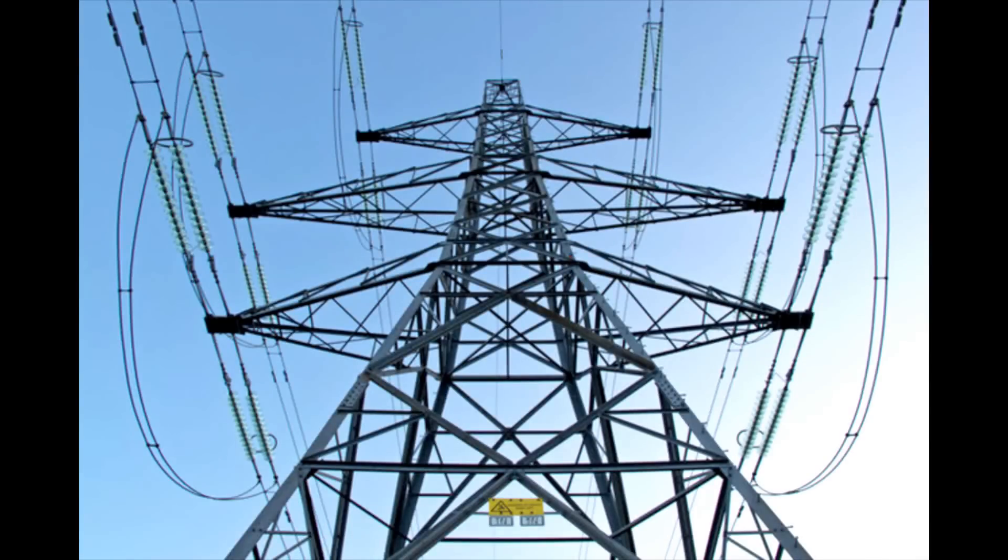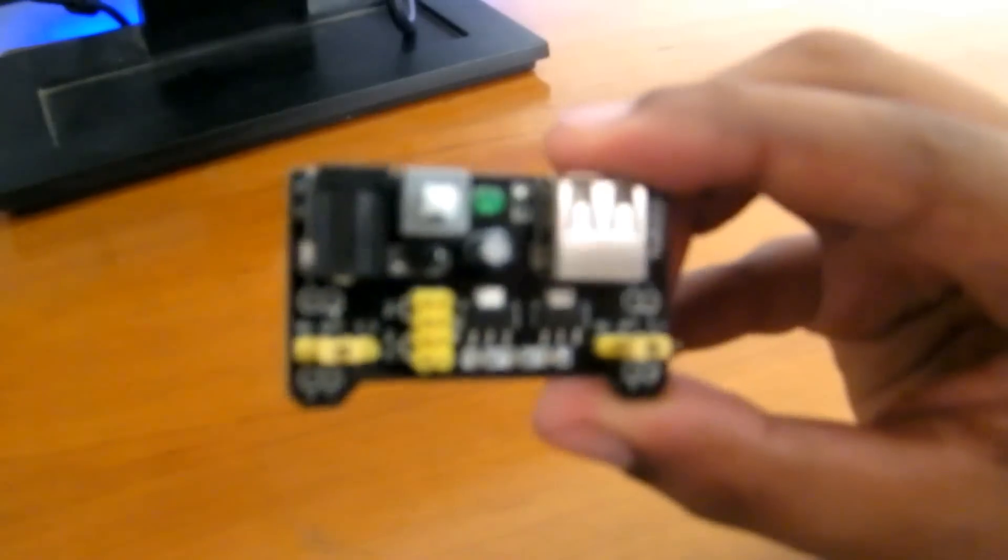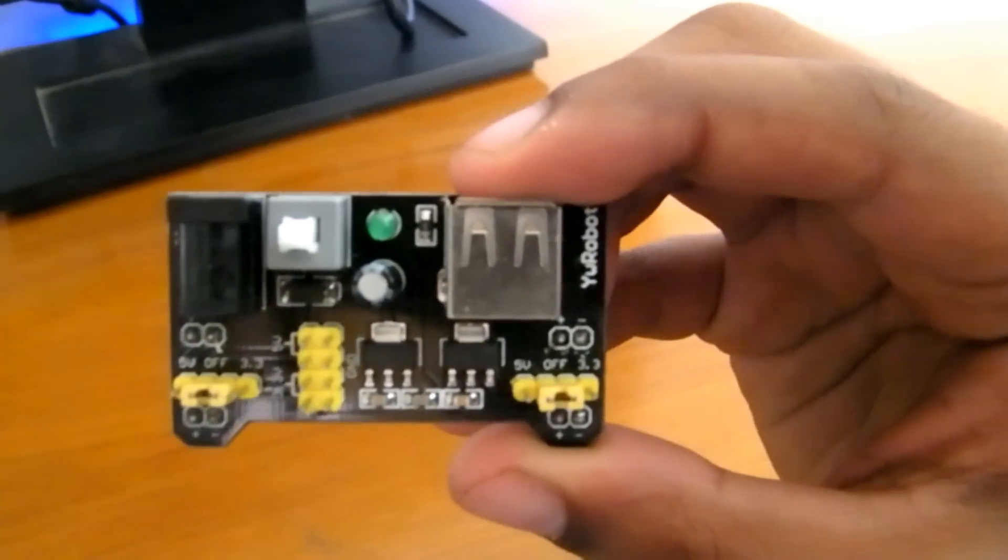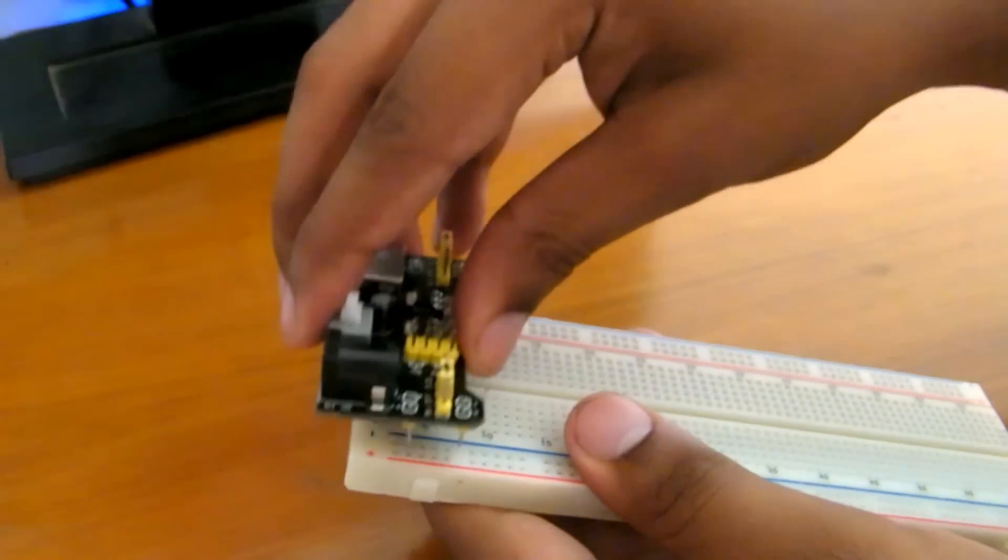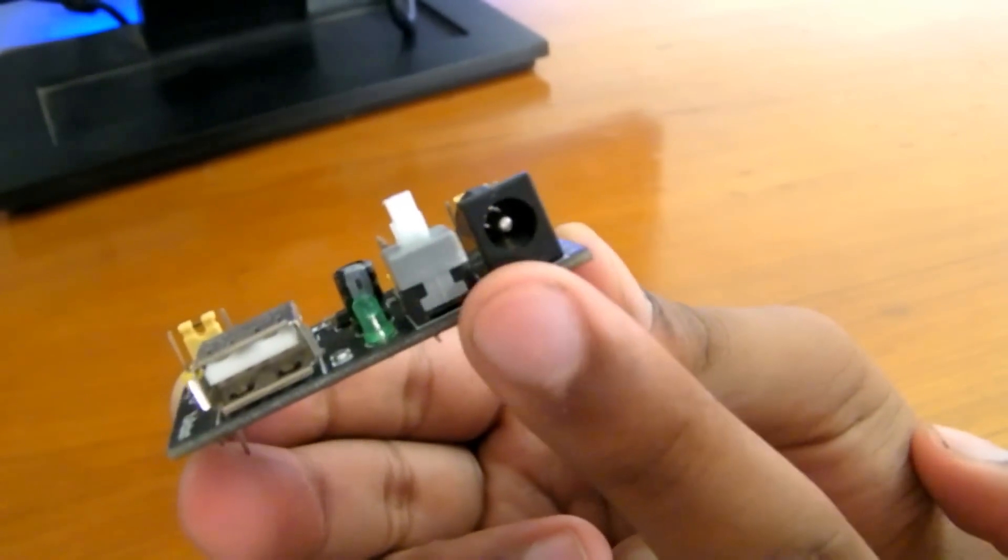And finally, a power source. You can use anything for this: a battery, an Arduino, Raspberry Pi. But I prefer this. This is a breadboard power supply. It costs less than a dollar and is really handy and easy to use while working with the breadboard. You can even power an Arduino with it using the USB port.